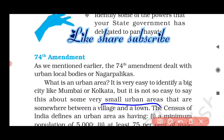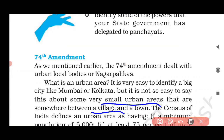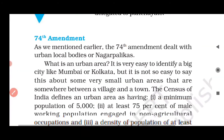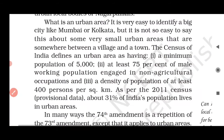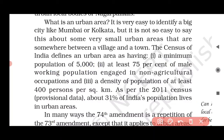The Census of India defines an urban area as having a minimum population of 5,000. Urban area is a place where at least 5,000 people live, and at least 75% of the male working population engaged in non-agriculture activities.